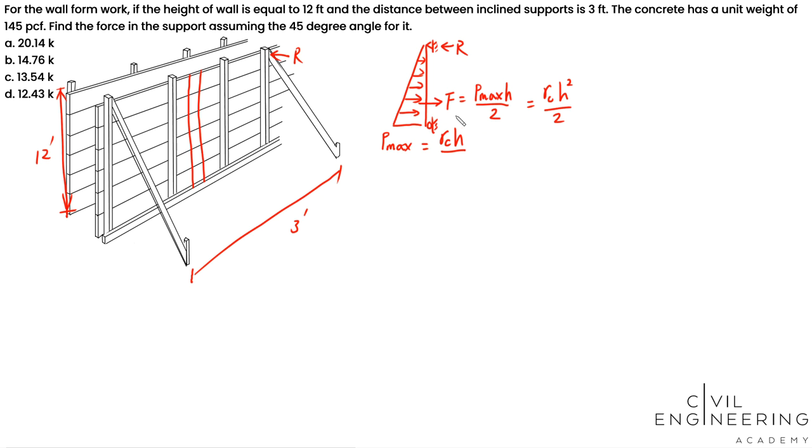So if we take moment to this point, your F times H divided by 3 equals to your R times H. So your R is F divided by 3, one-third. So that's gamma C H squared divided by 6, and this will give you 3480 pounds per foot.